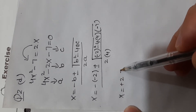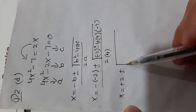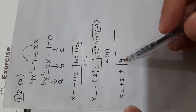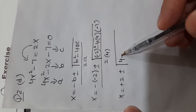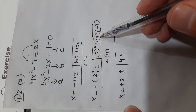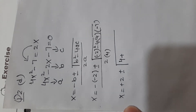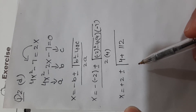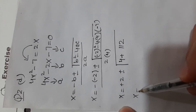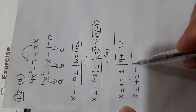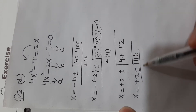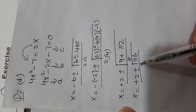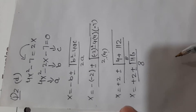Simplifying: minus into minus gives plus 2, plus or minus the square root of minus 2 squared, which is plus 4, minus times minus gives plus, so 4 times 4 times 7 is 112. We have 4 plus 112 which gives 116 under the root. The denominator is 2 into 4, which is 8. So x equals plus 2 plus or minus the square root of 116, over 8.